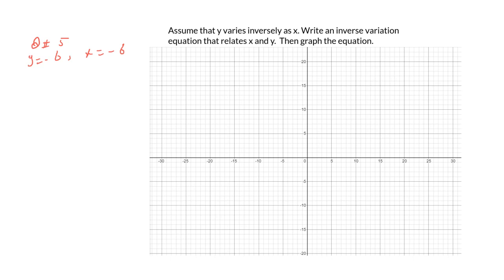Let's figure out the first part of the question. We have to set up an equation that relates x and y, given that y varies inversely as x. The first part is: y varies inversely as x. Remove the sign of proportionality and set up an equation: y equals k over x.